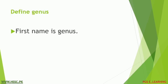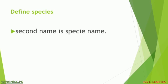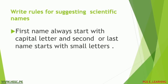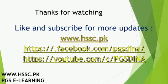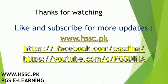Question number fourteen: what is binomial nomenclature? Question number fifteen: define genus. Question number sixteen: define species. Question number seventeen: write rules for suggesting scientific names. Question number eighteen: write the scientific name of onion. These are some important short questions of chapter number three. Hope it will be helpful for your paper.